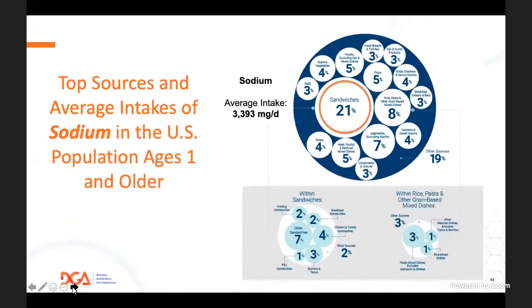For sodium, the primary source is sandwiches. Getting people to have sandwiches with whole grain breads, adding more tomatoes and lettuce, and using less meat and cheese and lower-salt versions is a way to reduce both sodium and saturated fat at the same time.